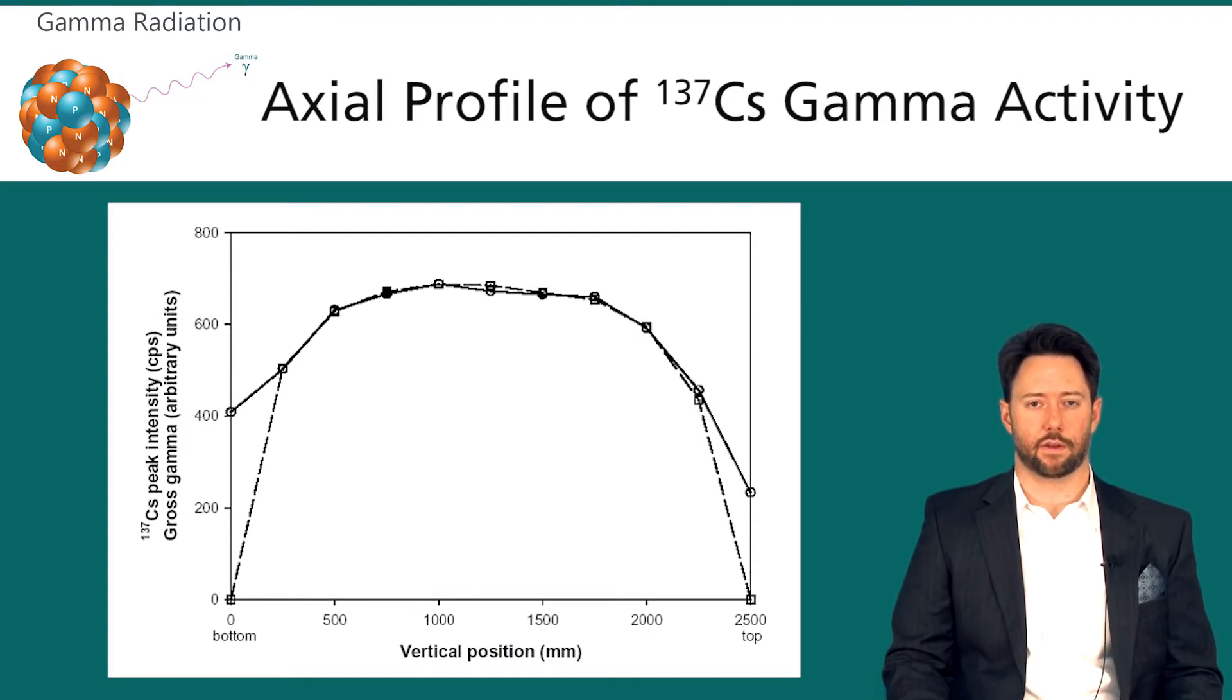You will see the curved shape there which shows that the greatest intensity of gamma rays comes from the center of the fuel assembly, and that makes sense because the most fissions occur during reactor operation at the center of the fuel assembly and there are less fissions that occur towards the ends.